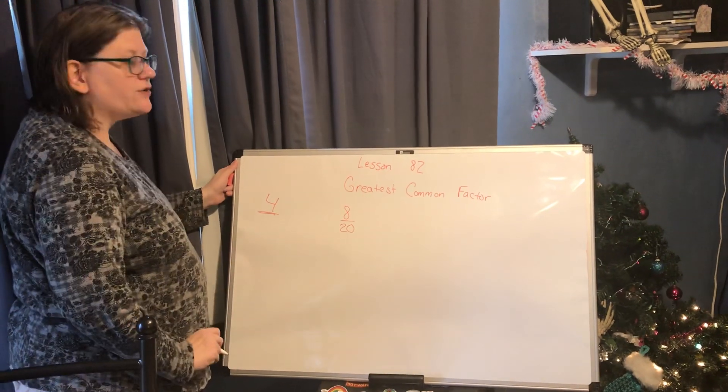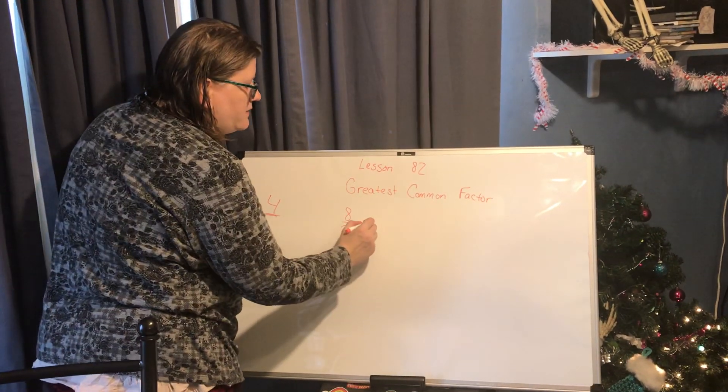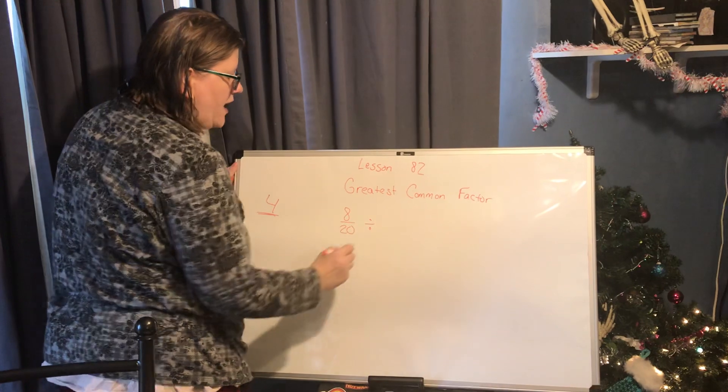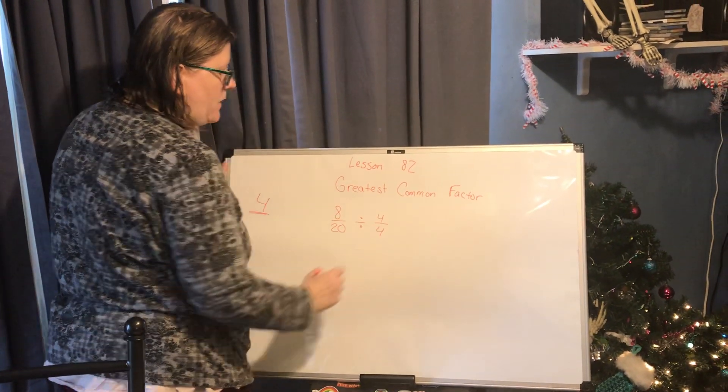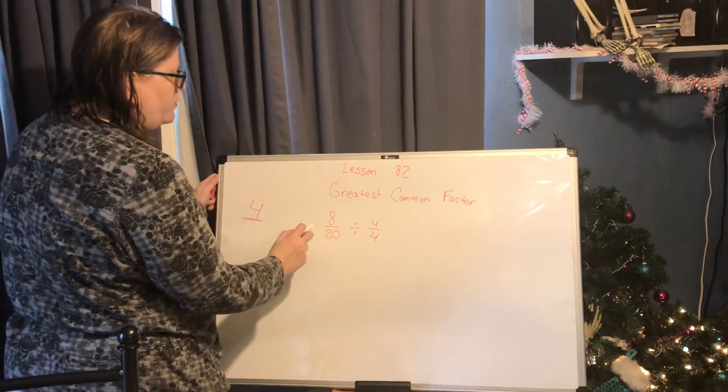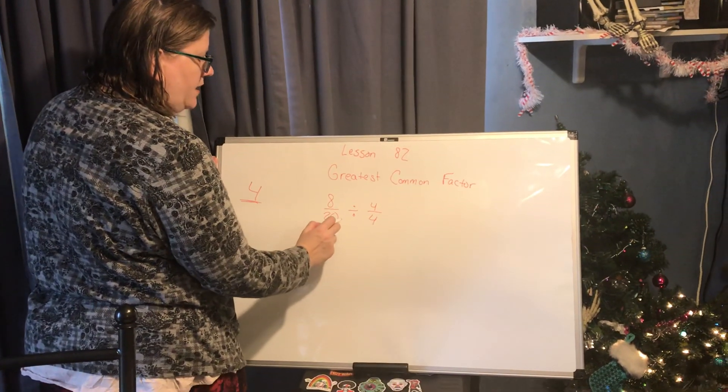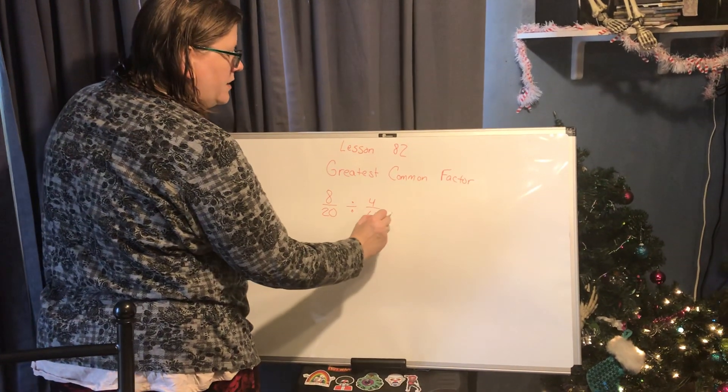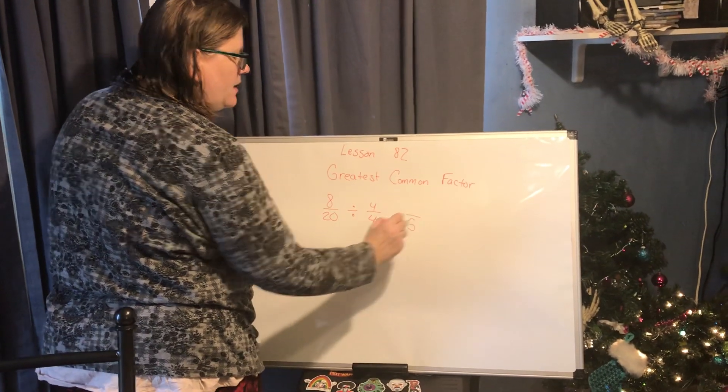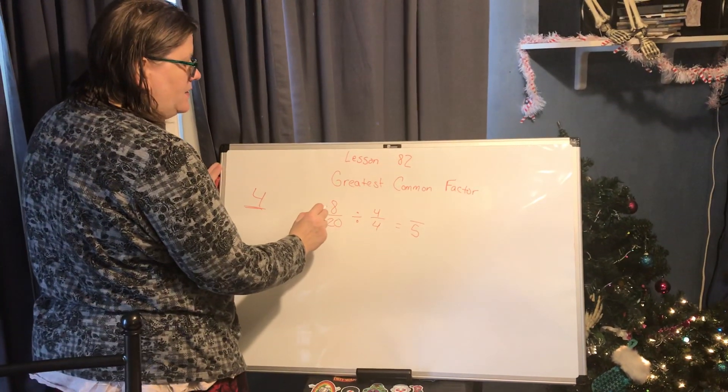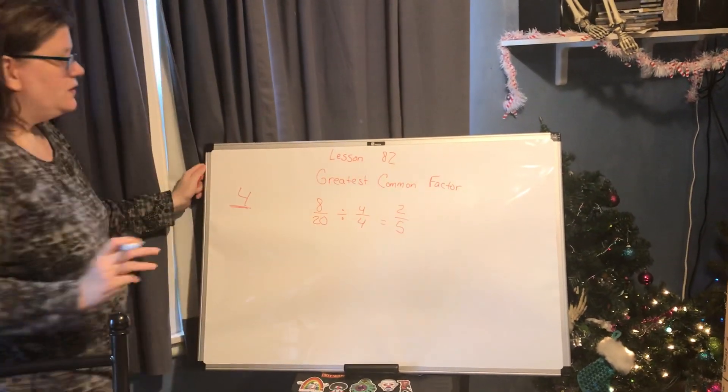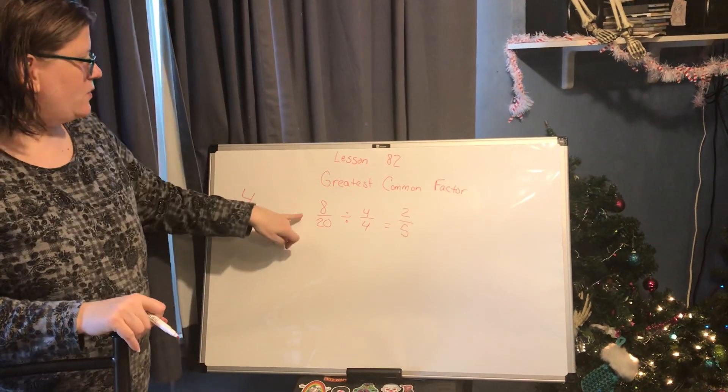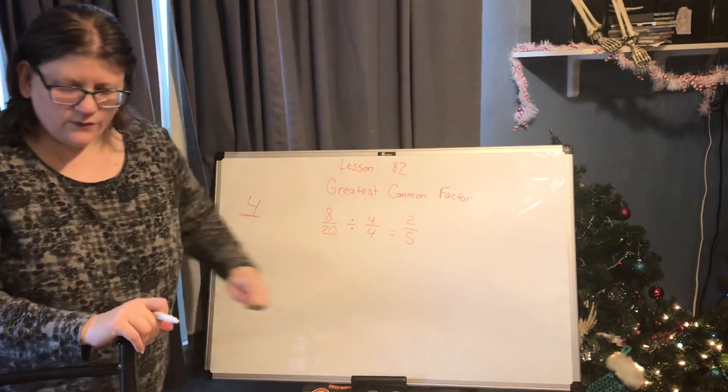Since we already figured out that the greatest common factor is 4, we will now divide this fraction by 4 over 4. First we'll start with the denominators: 20 divided by 4 equals 5, and 8 divided by 4 equals 2. So we were able to reduce 8 over 20 to 2 fifths.